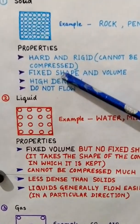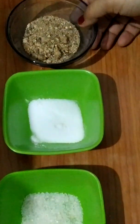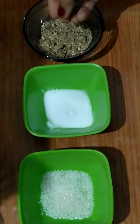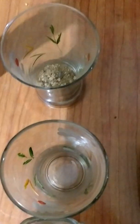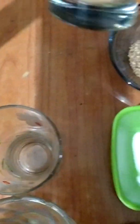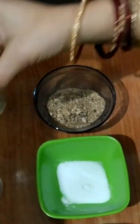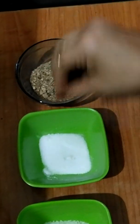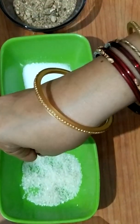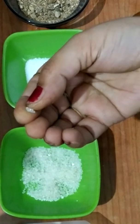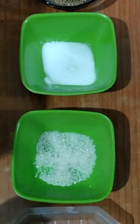Let us take the example of sand, salt and sugar. If I keep them into any container, they take the shape of that particular container. However, every crystal of sand, every crystal of sugar and every crystal of salt does not change its shape individually. Though the whole quantity takes the shape of the container, each individual crystal retains its shape. So we can say that solids have fixed shape and volume.